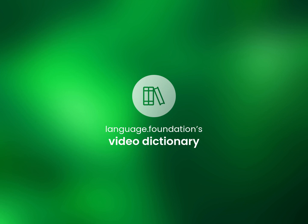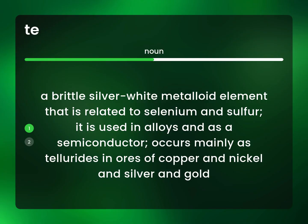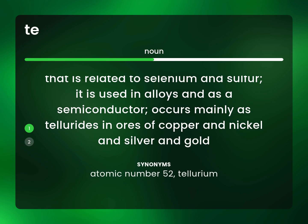Language.Foundation's Video Dictionary, helping you achieve understanding. A brittle silver-white metalloid element that is related to selenium and sulfur. It is used in alloys and as a semiconductor. Occurs mainly as tellurides in ores of copper and nickel and silver and gold. Atomic number 52, tellurium.